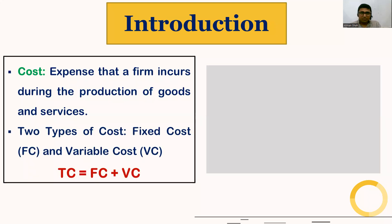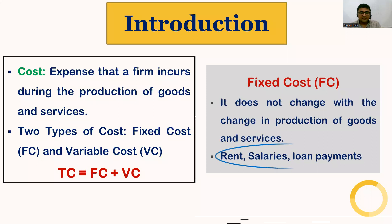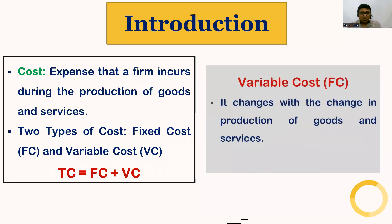What do we mean by fixed cost? Fixed cost does not change with the change in production of goods and services. For example, rent, salaries, and loan payments. These expenses do not change with production — they are constant — and therefore they are known as fixed cost.